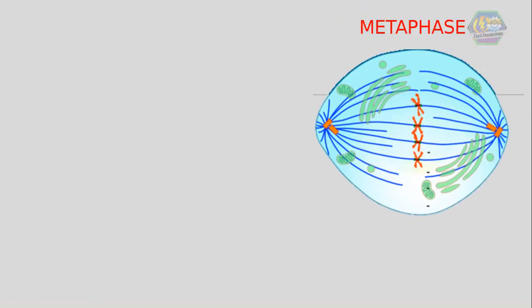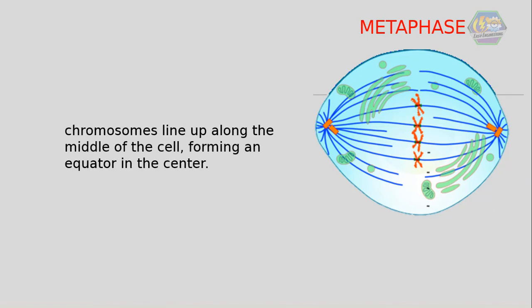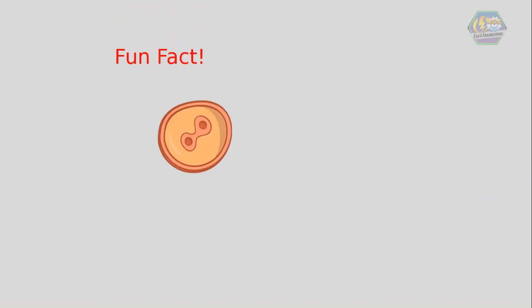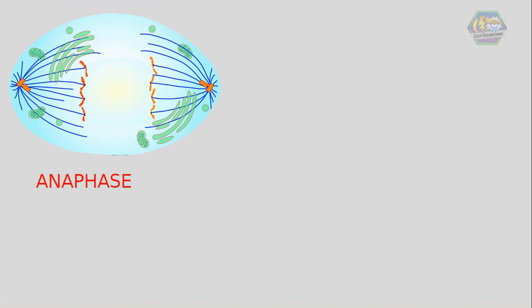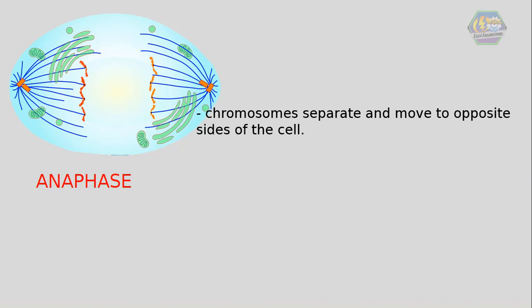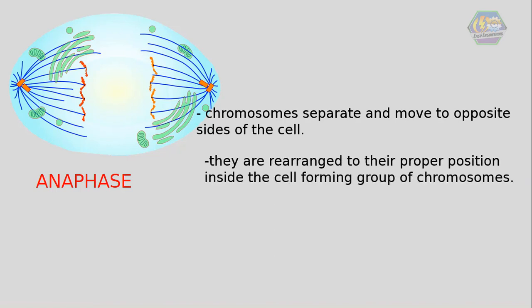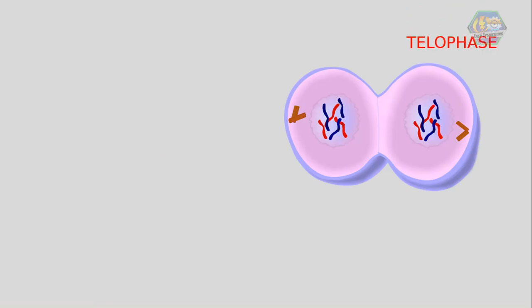Next is metaphase. During metaphase, the chromosomes line up along the middle of the cell, forming an equator in the center. Next is anaphase. Anaphase is like packing up to move out — during anaphase the chromosomes separate and move to opposite sides of the cell. In other words, they are rearranged to their proper position inside the cell, forming groups of chromosomes. The cell also elongates at this point.